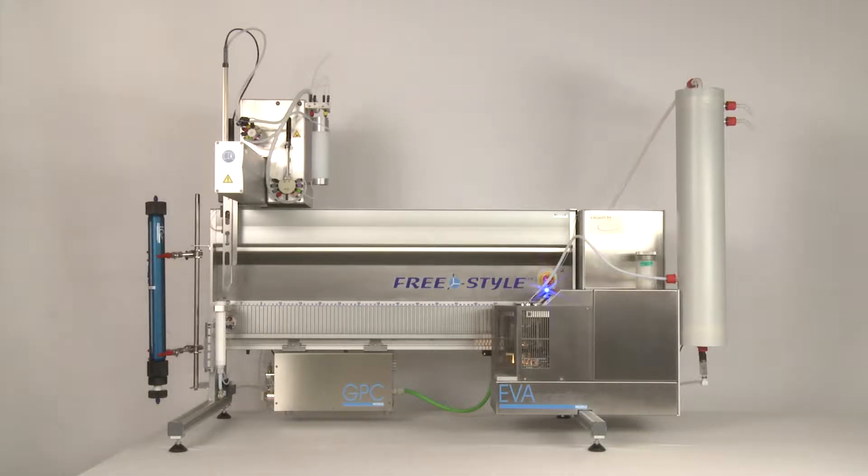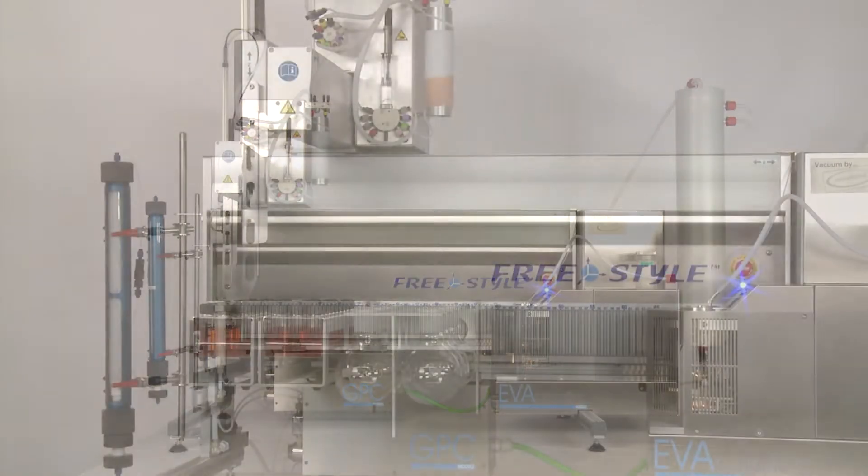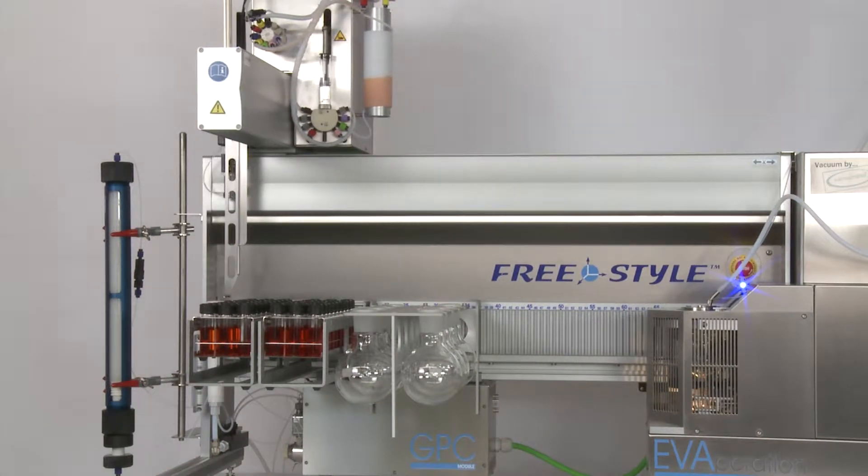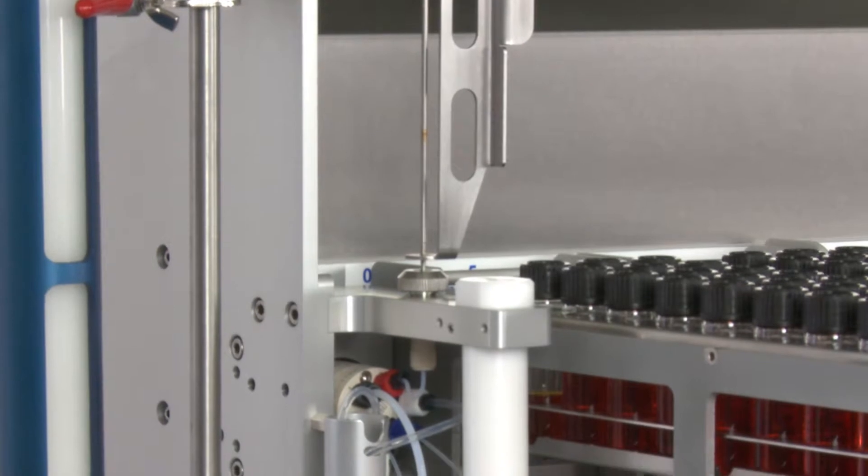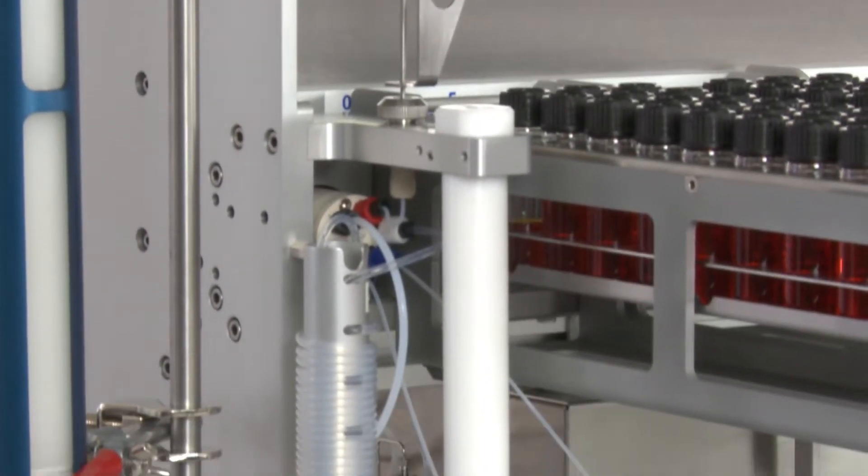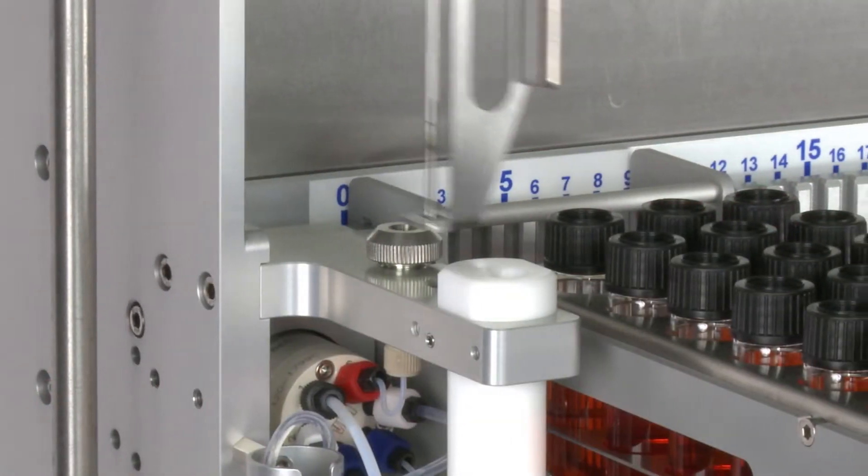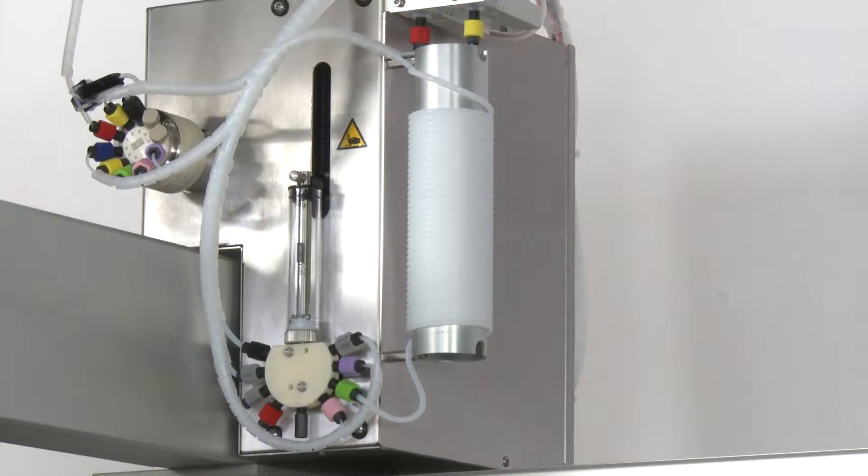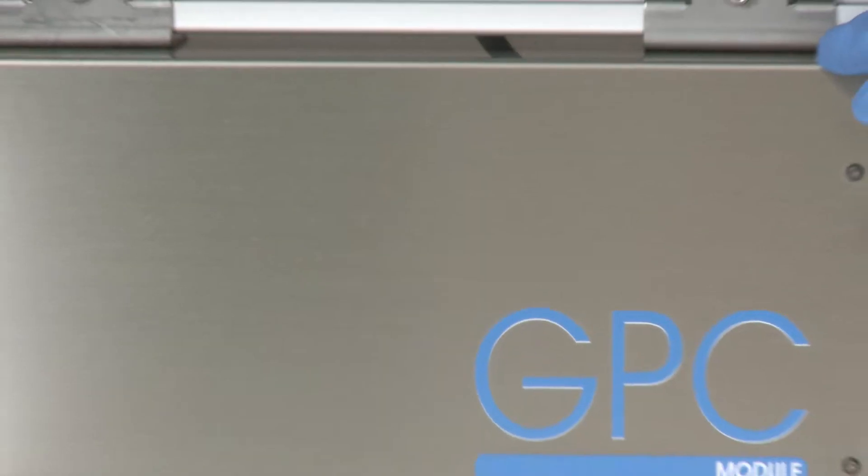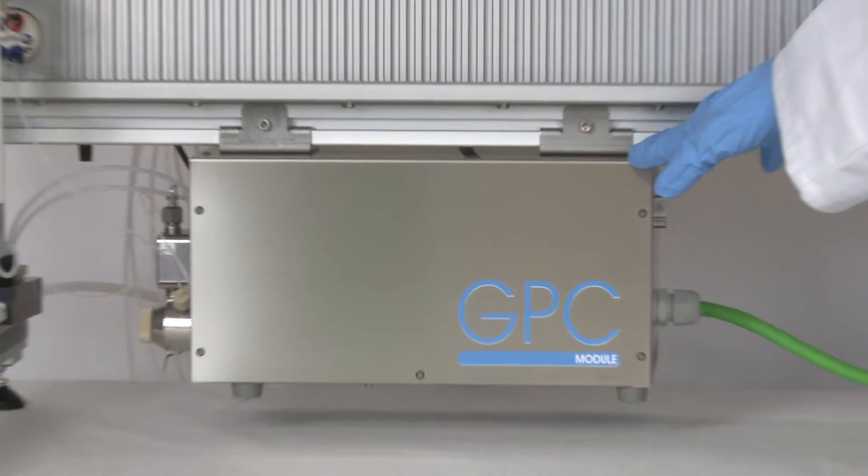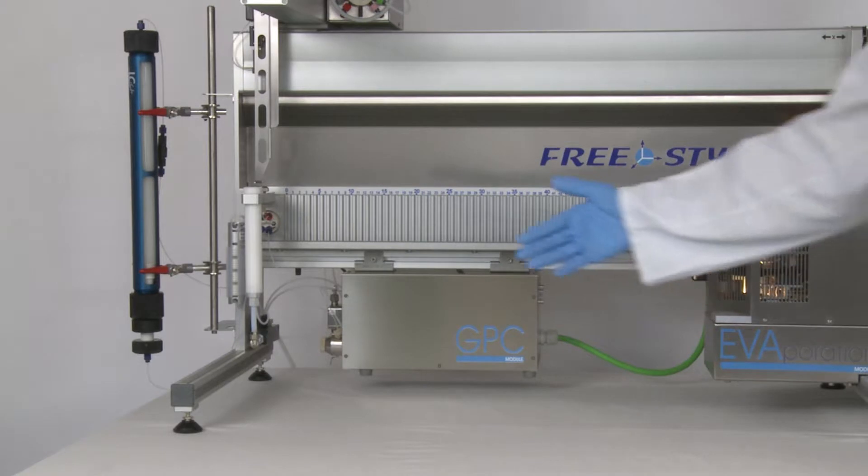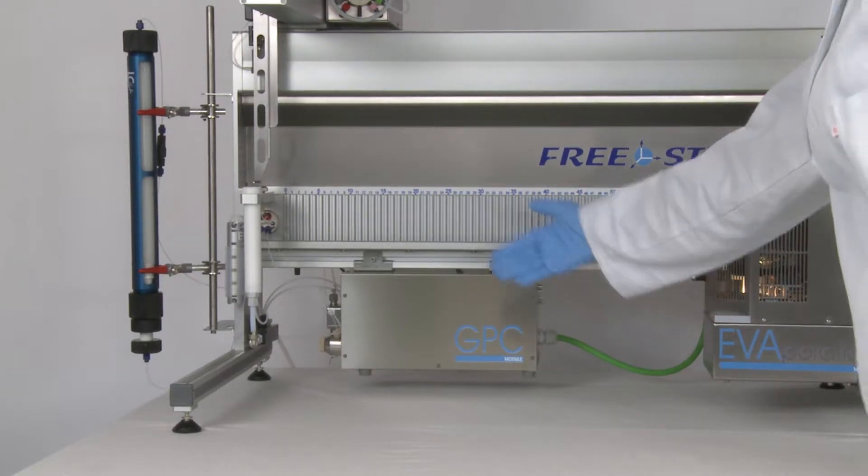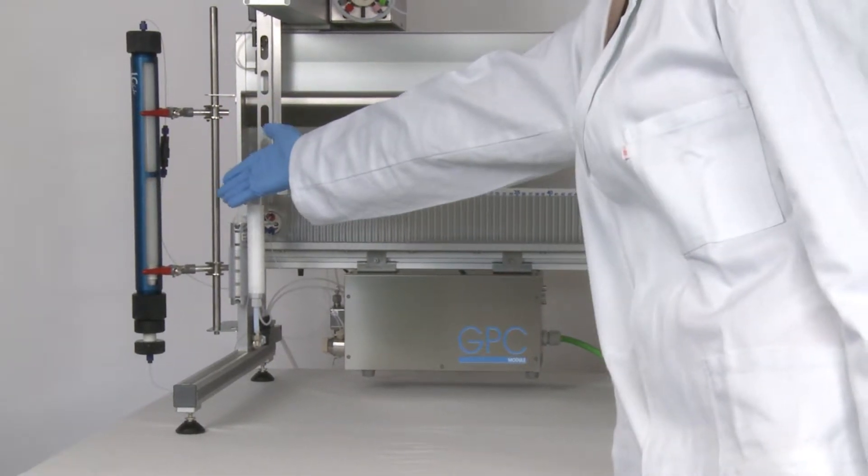In this video, we will demonstrate the FreeStyle BASIC with the GPC module. This system can be configured to be used with all worldwide established methods in sample preparation, for example the DFG-S19 or the USEPA-3640A. The GPC module consists of two parts, namely the FreeStyle BASIC with the GPC module and the LCTech GPC column.